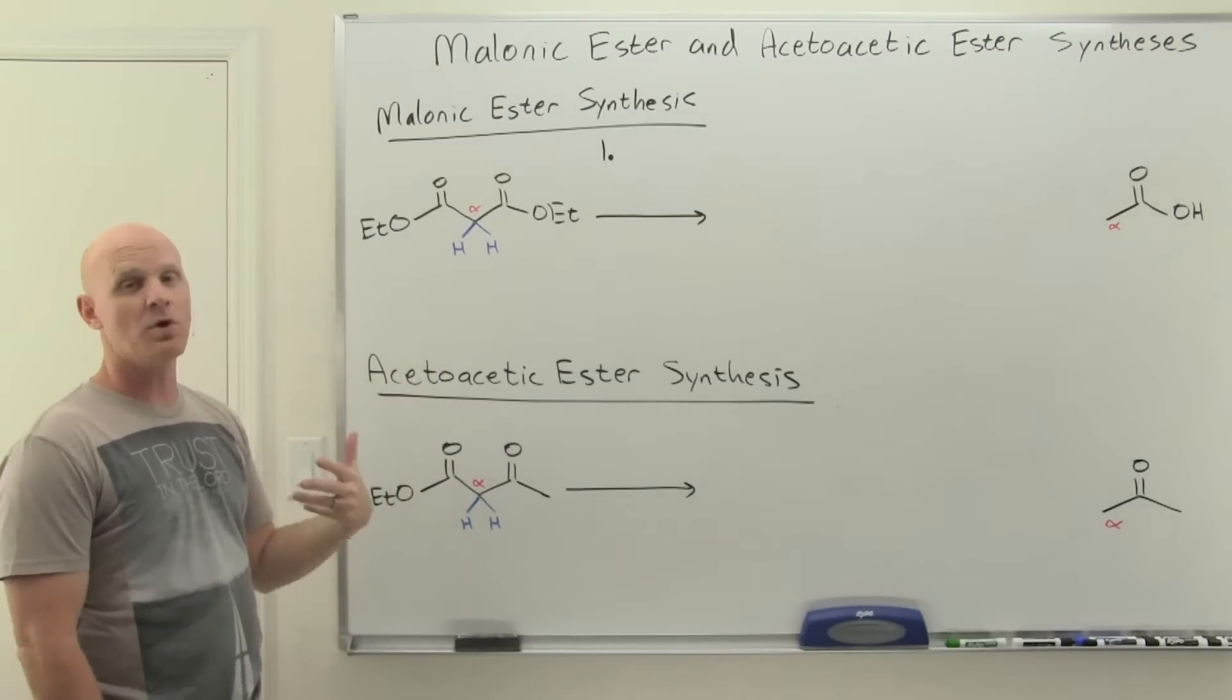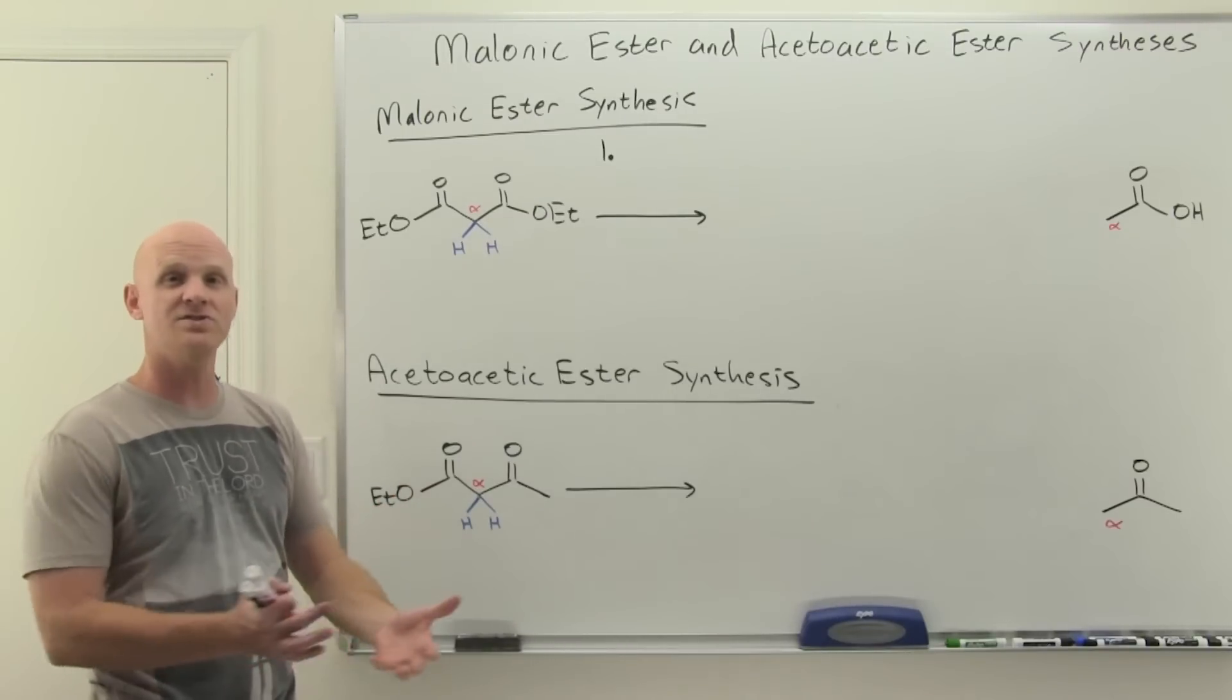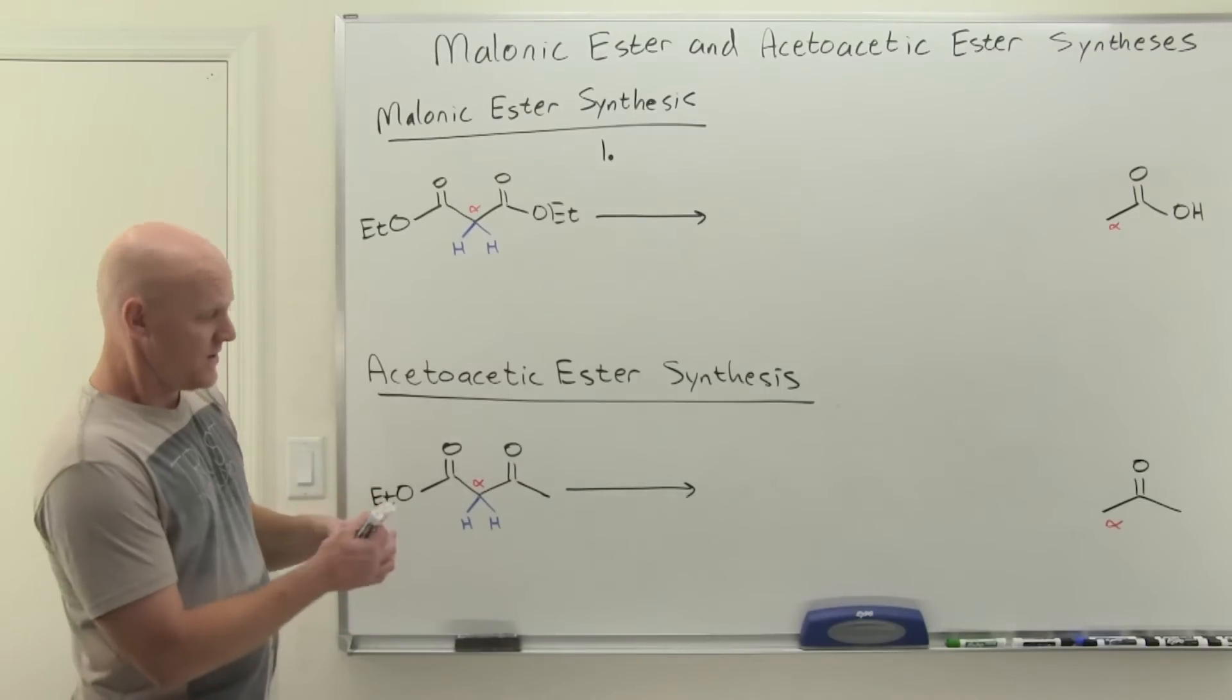We can deprotonate sequentially both of these hydrogens only one at a time. But we can deprotonate it forming an enolate and that enolate is going to act as a strong nucleophile, which can then go do SN2 with like a methyl or primary halide typically.